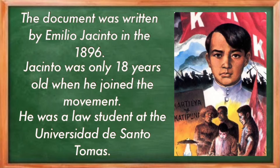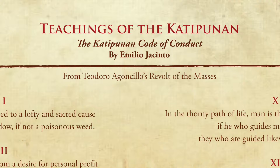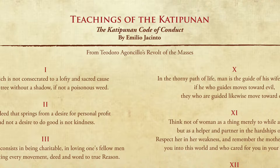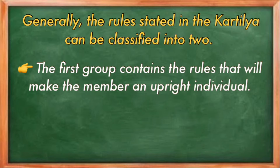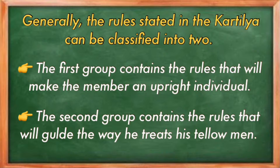In 1897, Bonifacio appointed Jacinto as a commander of the Katipunan in Northern Luzon. Jacinto was 22 years old then. At the young age of 24, in the town of Magdalena, Laguna, Jacinto died of malaria. The Kartilya can be treated as the Katipunan's code of conduct. It contains 14 rules that instruct the way Katipuneros should behave and which specific values they should uphold. Generally, the rules can be classified into two groups: the first contains rules that will make members upright individuals, and the second contains rules that guide the way they treat their fellow men.